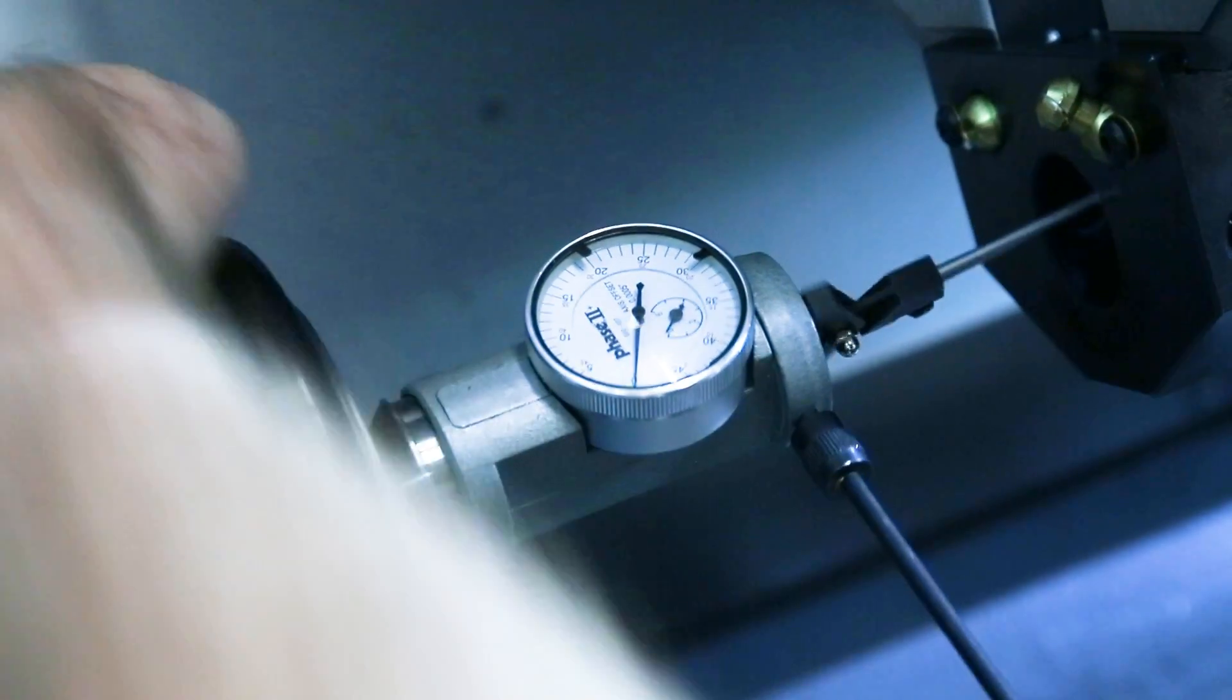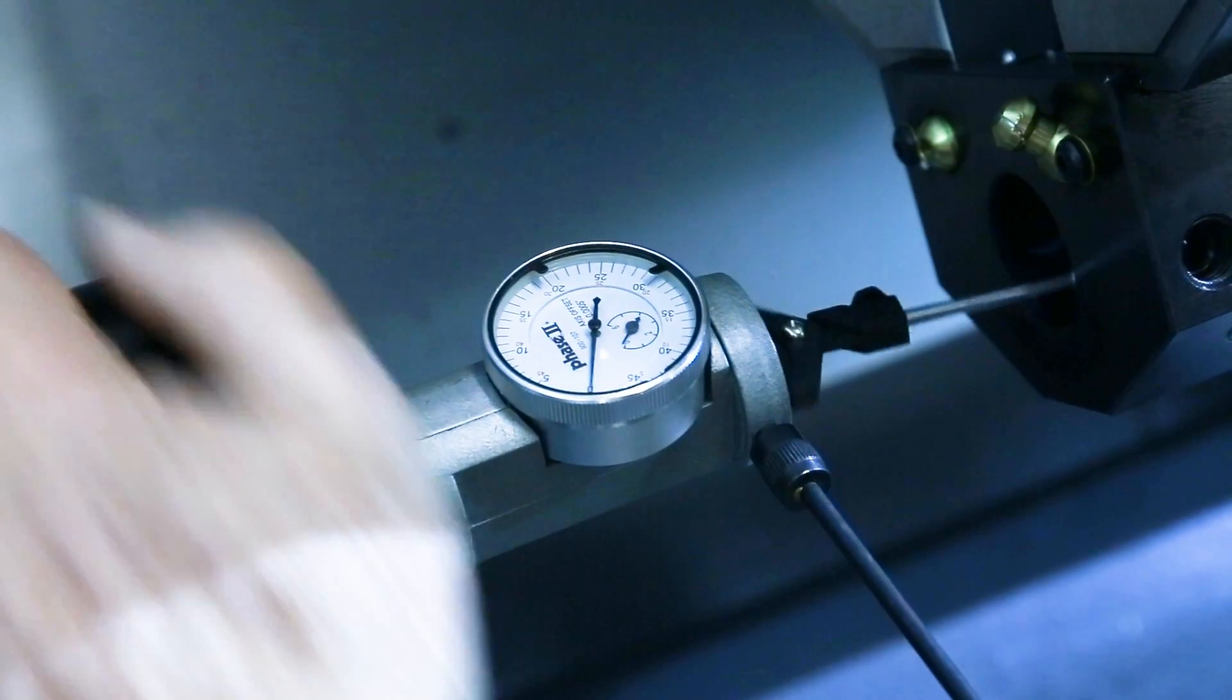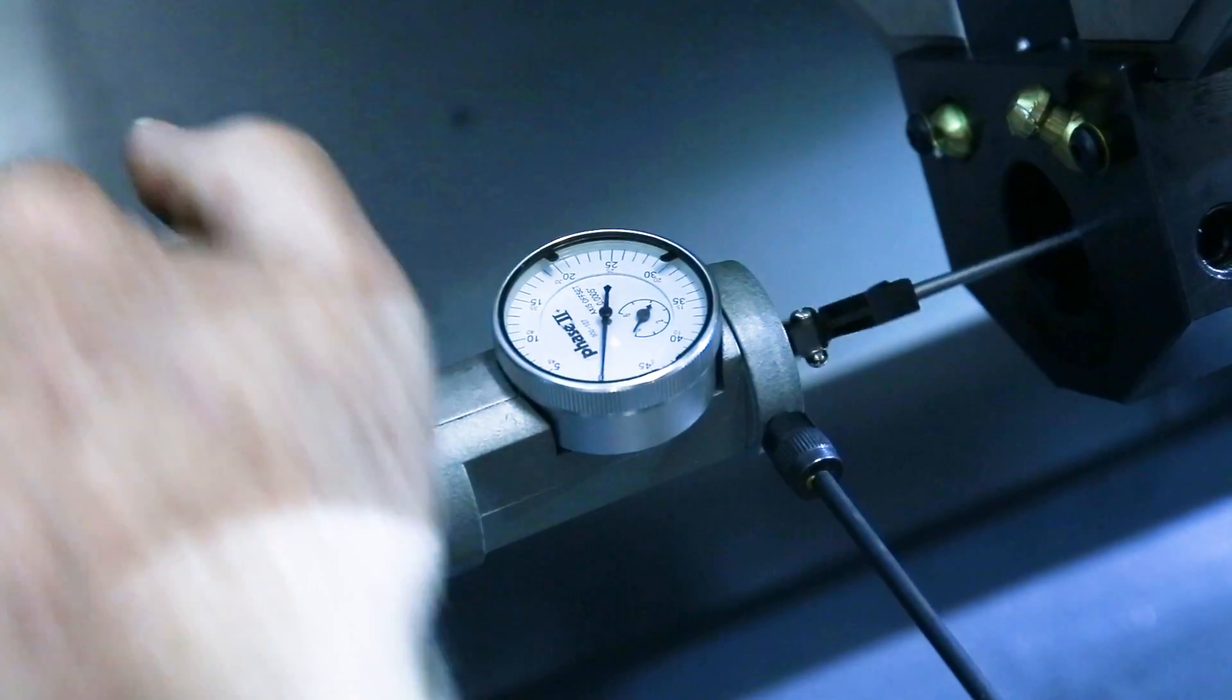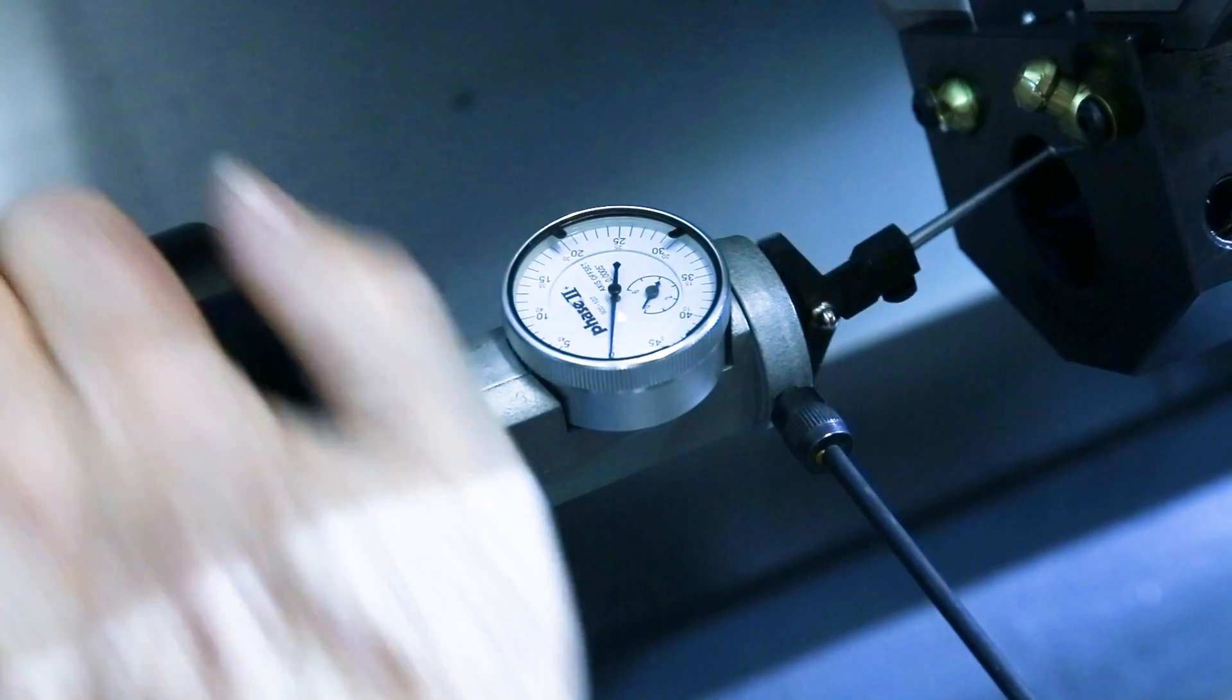A coaxial indicator is the best way to pick up a bore in a horizontal mill, or to pick up the pocket or align the tail stock on a lathe. If you don't own one of these, you should buy one.